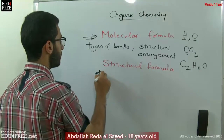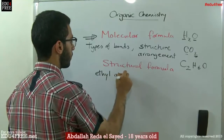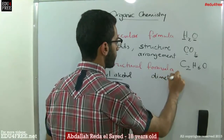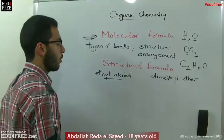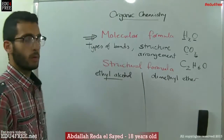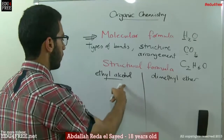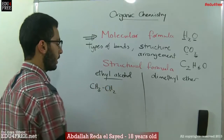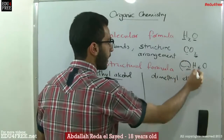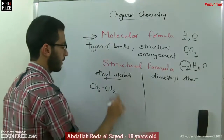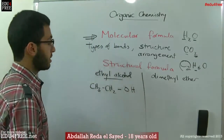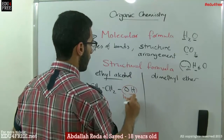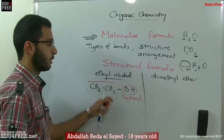We have ethyl alcohol and dimethyl ether. In ethyl alcohol, we have a carbon chain: CH3 and CH2 — those are the two carbons — accounting for five of the six hydrogens, with an OH group remaining. It's bonded like that. This OH is called the hydroxyl group.